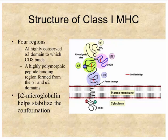Beta-2 microglobulin is important because, without it, the class 1 molecule won't have the appropriate conformation to bind peptide, and it will never even reach the membrane. Expression of class 1 molecules on the surface requires beta-2 microglobulin. People with deficiencies in the beta-2 microglobulin gene phenotypically lack class 1 MHC on their cells — the molecule is made but stays inside the cell because it's not folded properly.